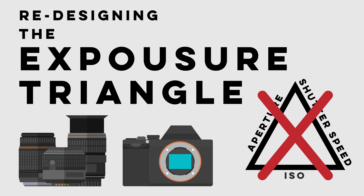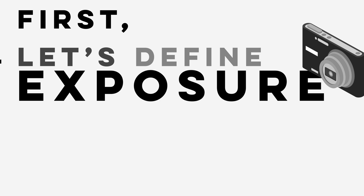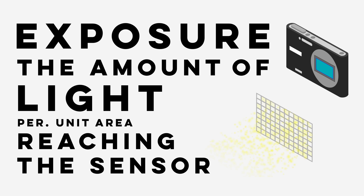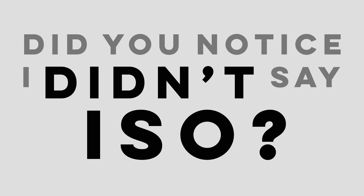First, let's define exposure. Exposure is strictly defined as the light per unit area reaching the sensor, and it is determined by scene luminance, aperture size, and shutter speed. Did you notice that I didn't say ISO? This is the problem with the exposure triangle — ISO does not actually affect the true exposure of an image.